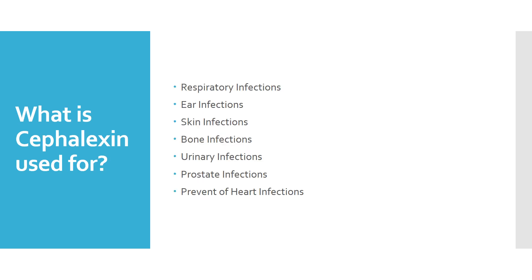So what's it used for? It's used for respiratory infections, ear infections, skin infections, bone and urinary tract infections, prostate infections, and it can be used to prevent heart infections. Just because you have a respiratory infection doesn't mean that cephalexin is the right antibiotic for it.